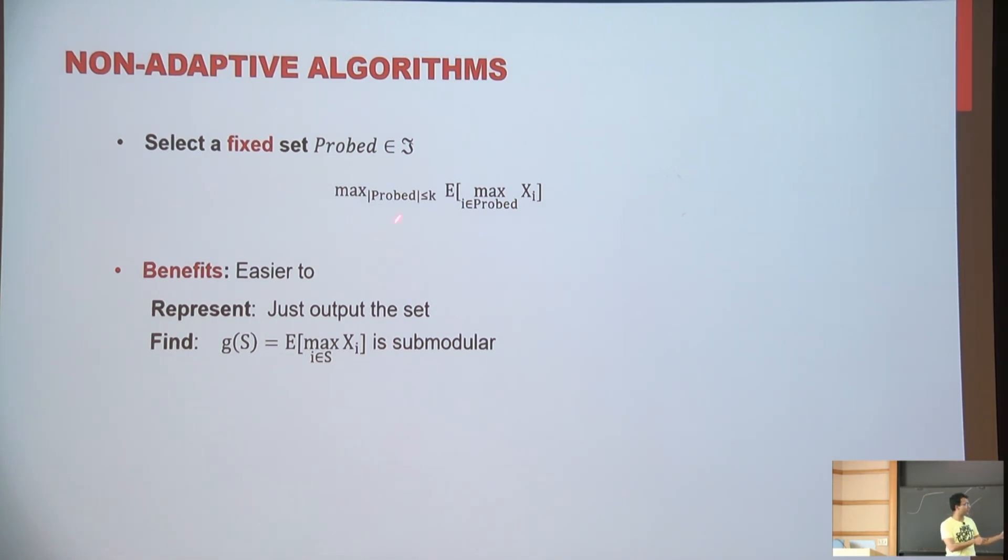And often they are also very easy to find. For example, this function turns out to be sub-modular. So we know simple, from that long list of discrete optimization problems, we know some standard ways of solving this and optimizing this. So this we know how to solve.